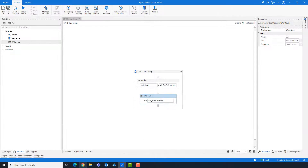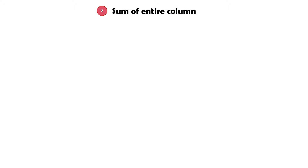Now let's move to the next point. In this part of the video I will show you how to get the sum of all rows of a column in a data table. First I will show you how the statement looks. We set first the data table variable, then dot, then as enumerable, then dot, then the function sum. After that we have to define which column should be summed up.